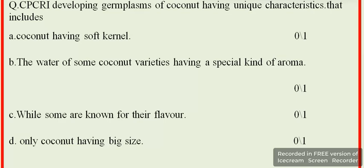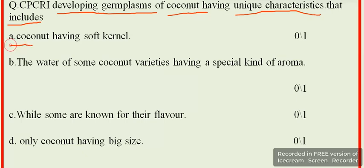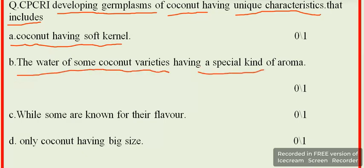CPCRI is developing germplasms of coconut having unique characteristics. Option A: coconut having soft kernel. Option B: the water of some coconut varieties having a special kind of aroma. Option C: some coconut varieties are known for their flavor.